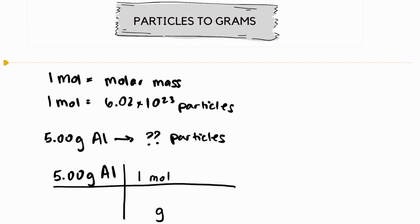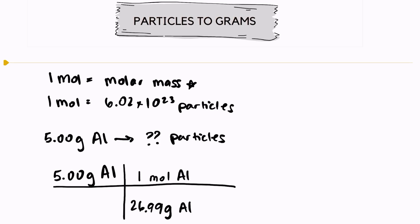Using this conversion factor, one mole is equal to 26.99 grams of aluminum. I know that by looking at the periodic table — the atomic mass of aluminum is 26.99. If I were to stop my conversion factor here, I would know how many moles of aluminum were in this sample. But I'm asked for the number of particles, so we have to use one more unit conversion.